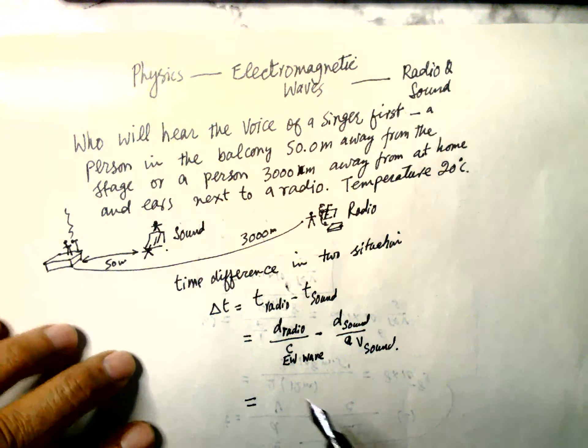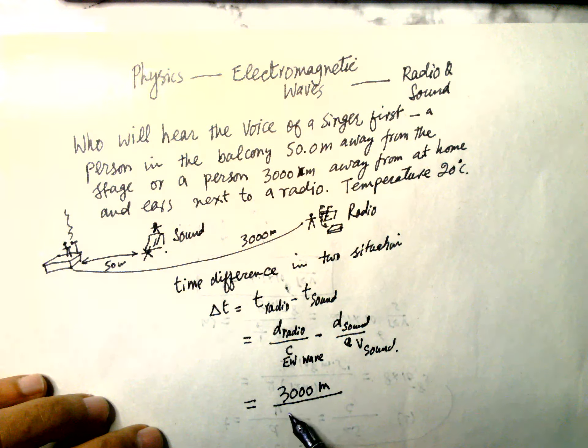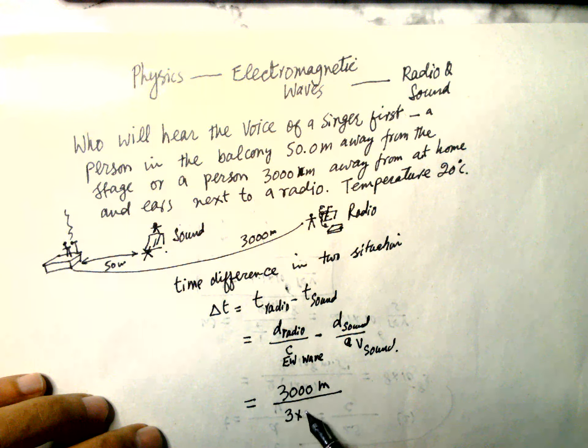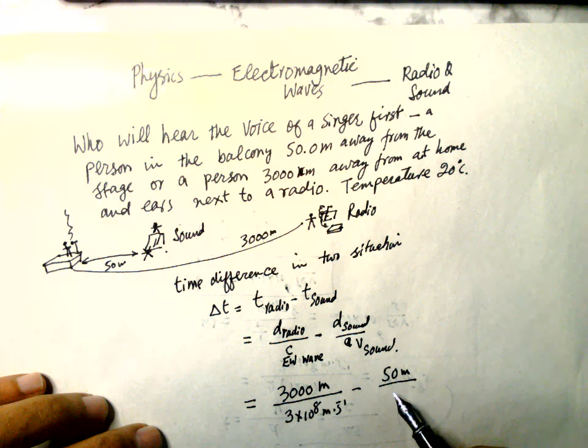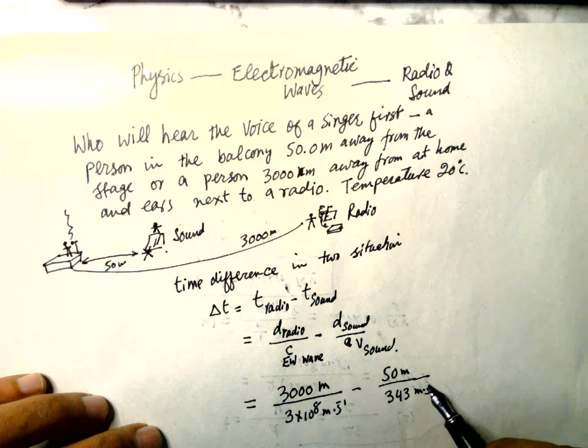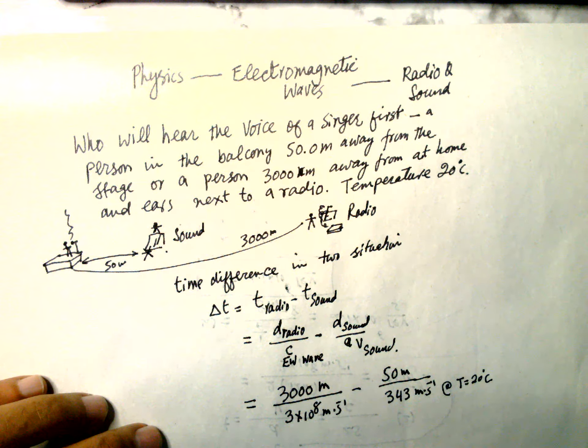So this is equal to 3,000 meters divided by the velocity of light, 3 times 10^8 meters per second, minus the distance 50 meters divided by the speed of sound, which is equal to 343 meters per second at temperature 20 degrees Celsius. And the answer is minus 0.14 seconds.